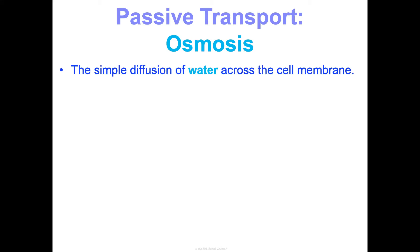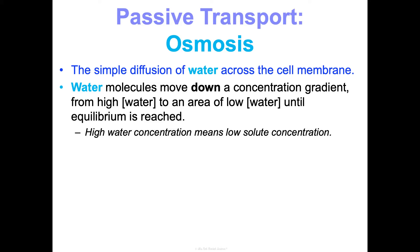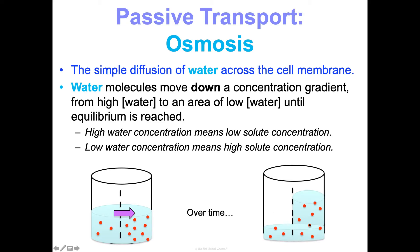Osmosis is the simple diffusion of water across the cell membrane. We're looking at water moving from high water concentration to low water concentration — so we're looking at the water concentration gradient, not the solute concentration. Where there's a high water concentration, there's a low solute concentration. When your lemonade is really watery, it has a high water concentration, meaning there's low solute. Even though the volume of water may be the same on either side of the cell membrane, the concentration is not. Water moves from the side with high water concentration to the side with low water concentration until it balances out.